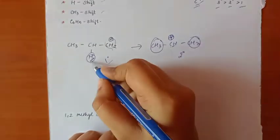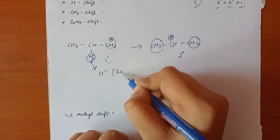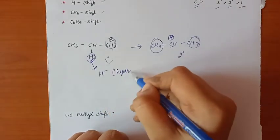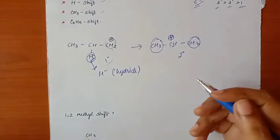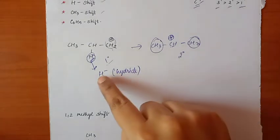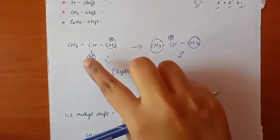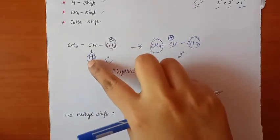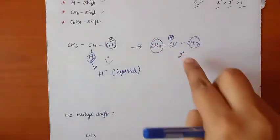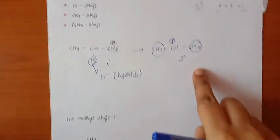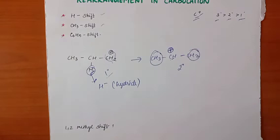Hydrogen in this context is called a hydride — it carries a negative charge, so it is H⁻. This is what makes it a hydride shift. The reason this happens is that the resulting structure is more stable.